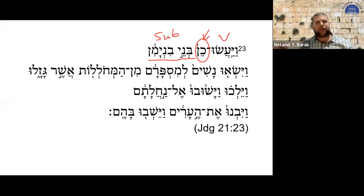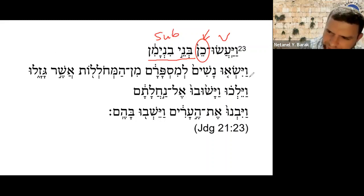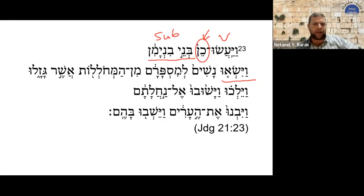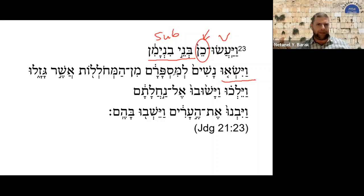According to that solution, they did. Vayis'u nashim lemisparam — they married women according to their numbers. You can see that while the Bible does not forbid having more than one wife, the standard was definitely having one wife.